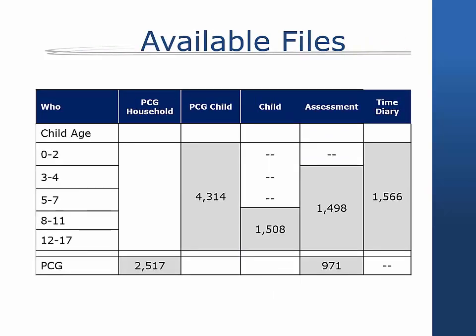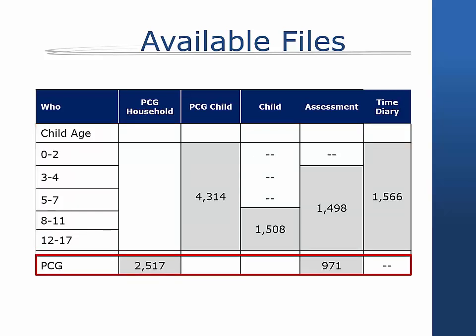When downloading data sets from the PSID's online data center, the files will be identified differently depending on which files your variables come from. For the ongoing CDS collected in 2014 and beyond, all files except the standalone PCG household file will also be identified at the child level, meaning that the 1968 ID and person number on this file will be that of the child in CDS 14. However, if you download variables that are only from the PCG household file, you will get a data set which is identified at the PCG level, meaning that the 1968 ID and person number on that file will be that of the PCG in CDS 2014. Please note that if multiple CDS files are downloaded, including the PCG household file in the ongoing CDS, it will still be identified at the child level, with a separate standalone file being delivered at the PCG level, containing only the PCG variables with the suffix PCG14.